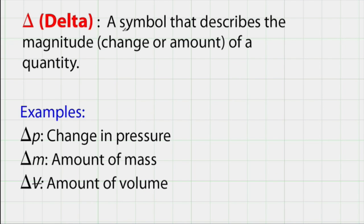In summary, we use the delta symbol to describe magnitude, a change in something or an amount of something. We've looked at three examples. Delta P is a change in pressure, often called a differential pressure.